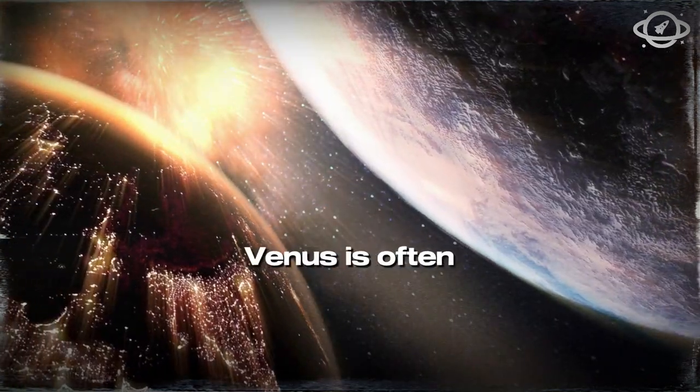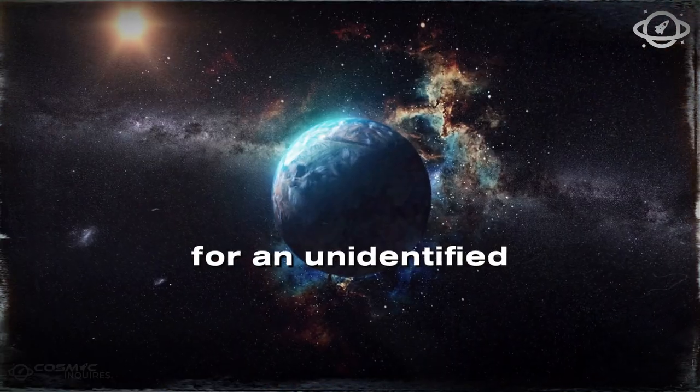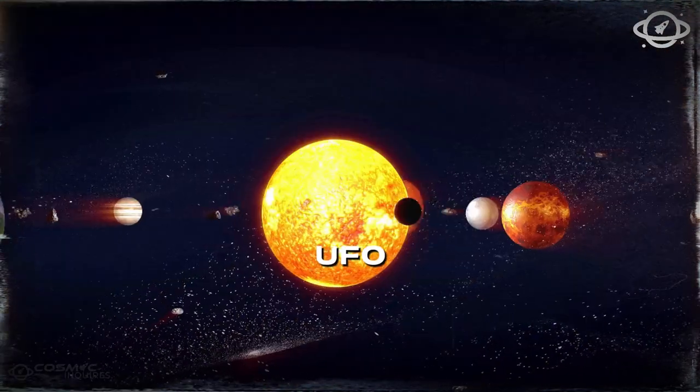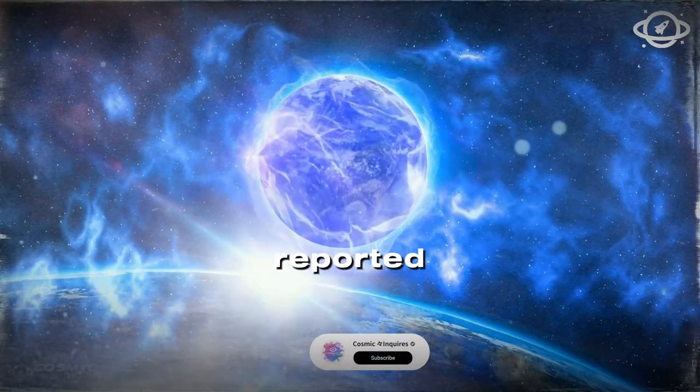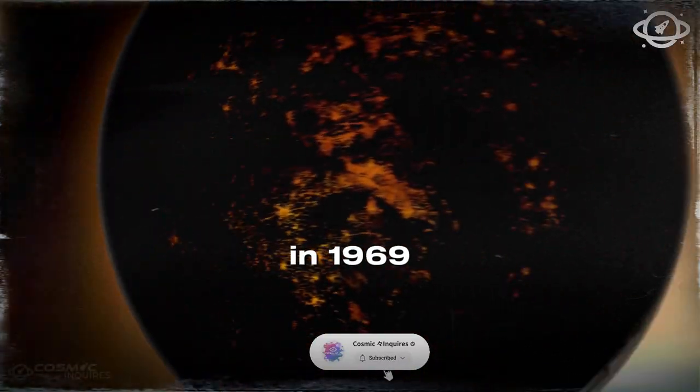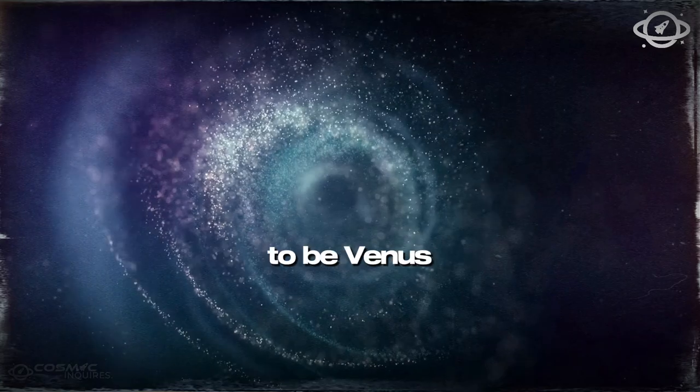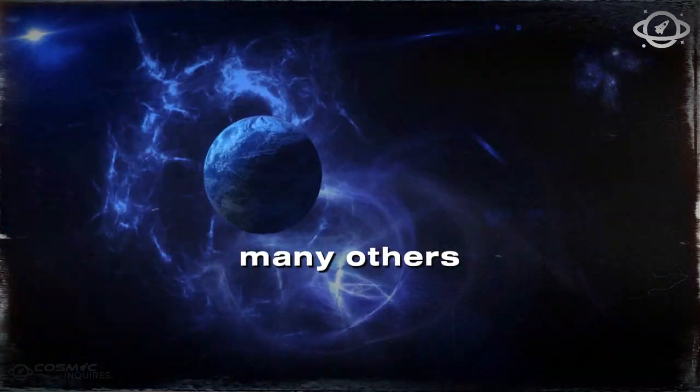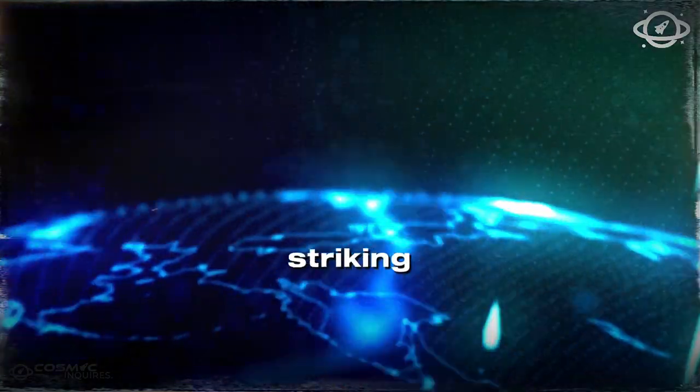As a result, Venus is often mistaken for an unidentified flying object, UFO. In fact, U.S. President Jimmy Carter reported seeing a UFO in 1969, which was later suggested to be Venus. Many others have made the same mistake due to its striking brightness.